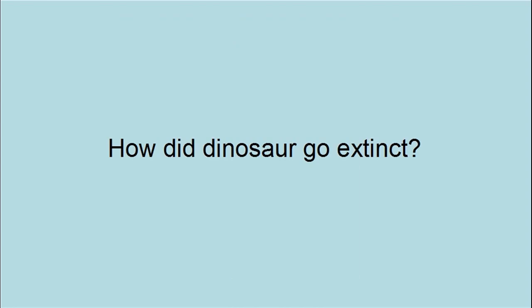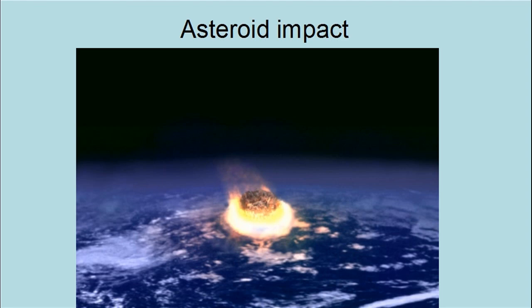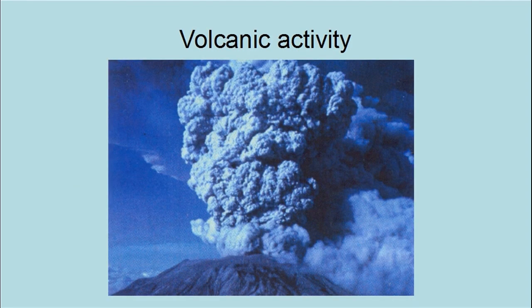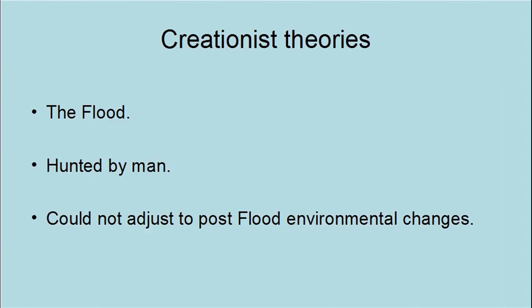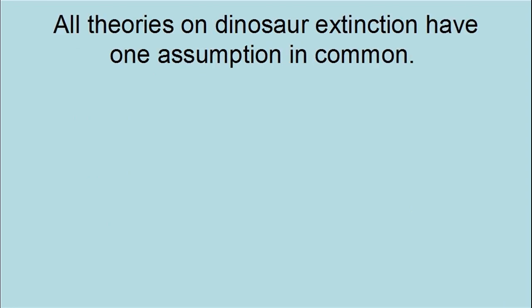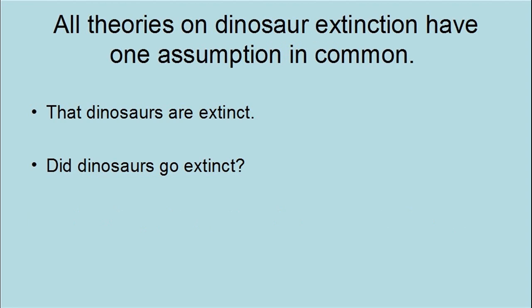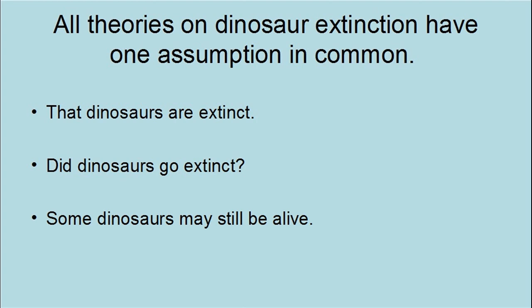One common question asked by both creationists and evolutionists is: how did the dinosaurs go extinct? Currently, most evolutionists would say it was an asteroid impact that killed them — the next runner-up is volcanic activity. Some other theories include the flood, being hunted to extinction by man, and that they could not adjust to post-flood environmental changes. Now, all theories on the extinction of dinosaurs have one assumption in common: that dinosaurs are extinct. So the first question we need to ask is, did the dinosaurs go extinct? It turns out that there is evidence that the answer is no — some dinosaurs may still be alive.